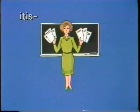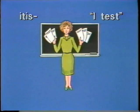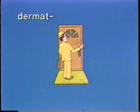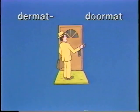The next element is itis. Itis sounds a little bit like I test. Since I test does not immediately suggest a visual image, we'll create one — here we see a teacher holding test papers saying 'I test' as she prepares to test her students. Itis, I test. Say it together: itis, I test. Next, the element dermat. Dermat sounds like doormat, so we'll use doormat as the audionym. Here we see a salesperson standing on the doormat. Dermat, doormat. One time with me: dermat, doormat.